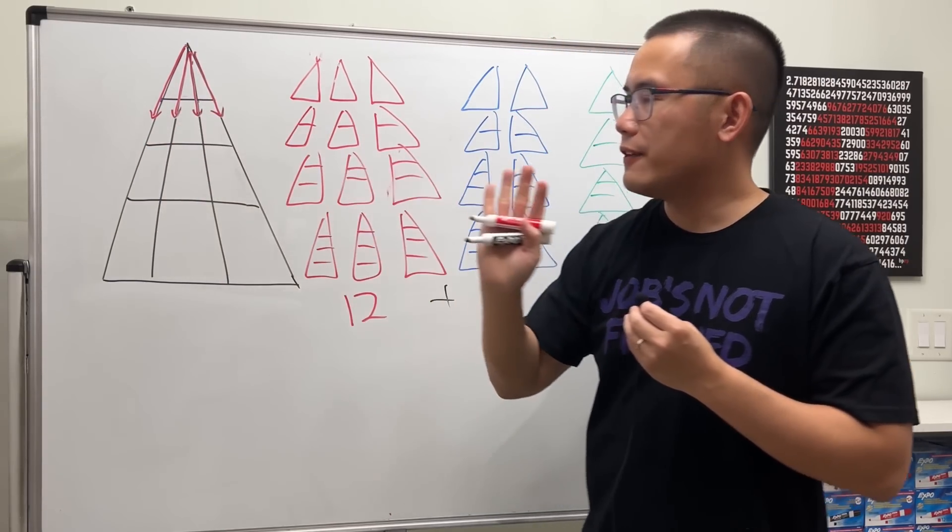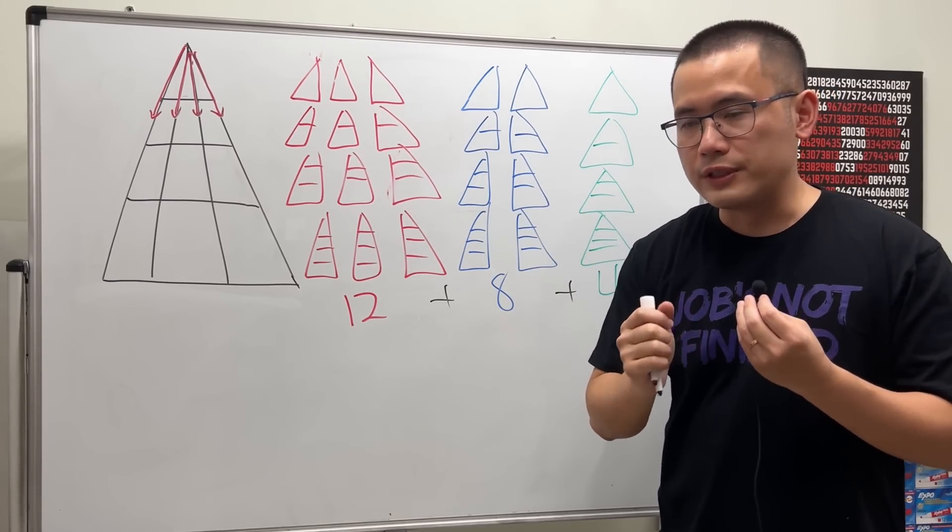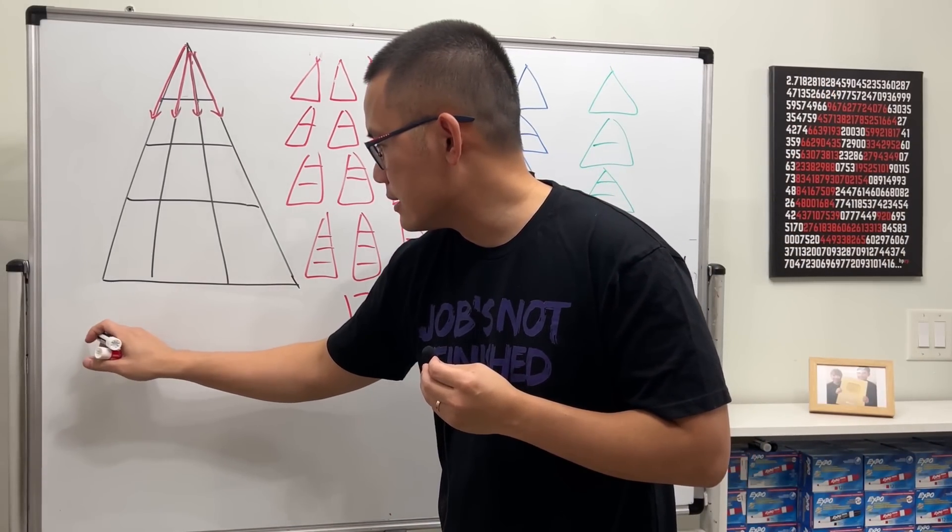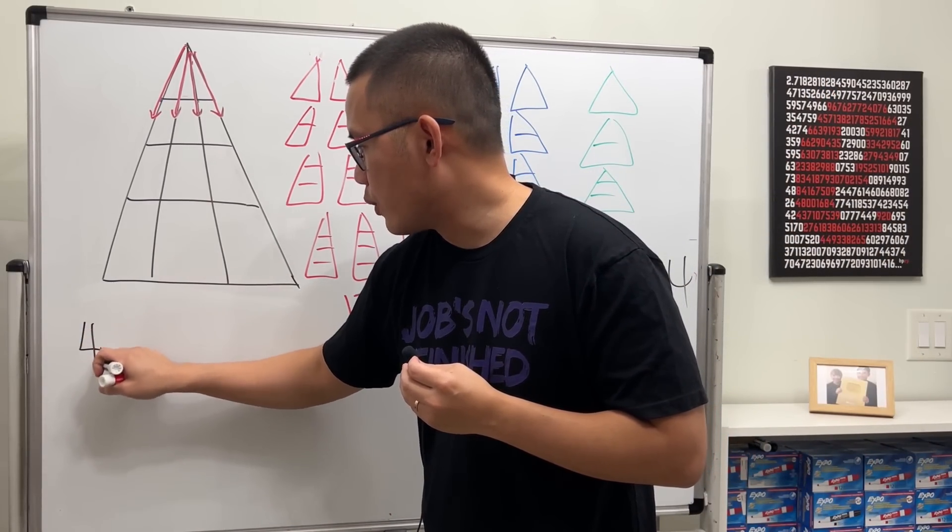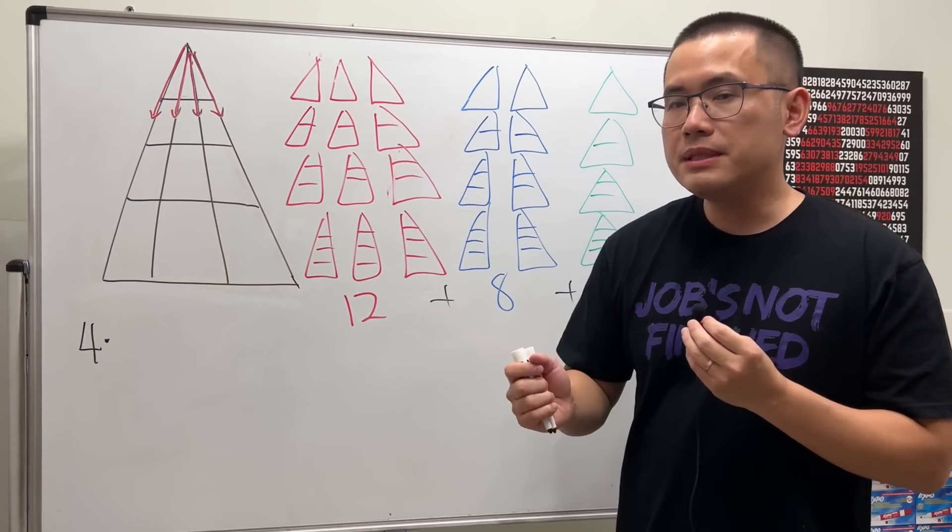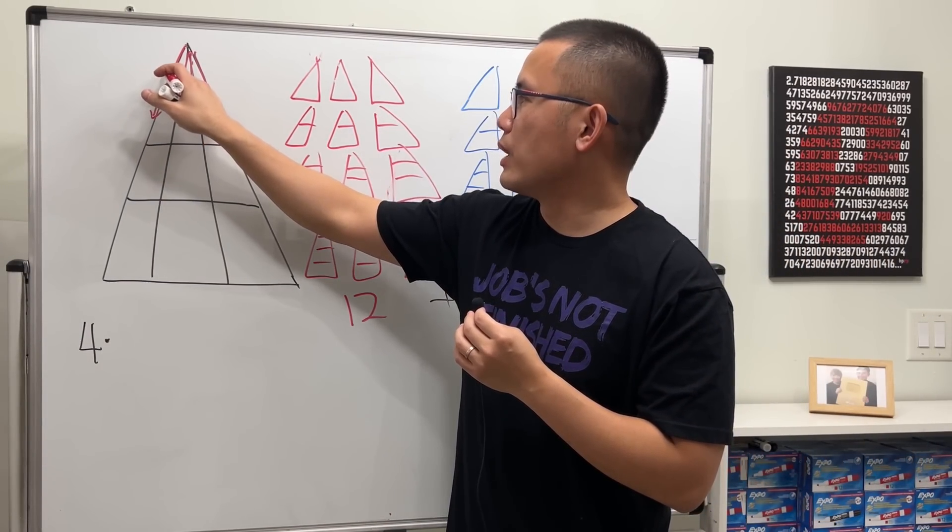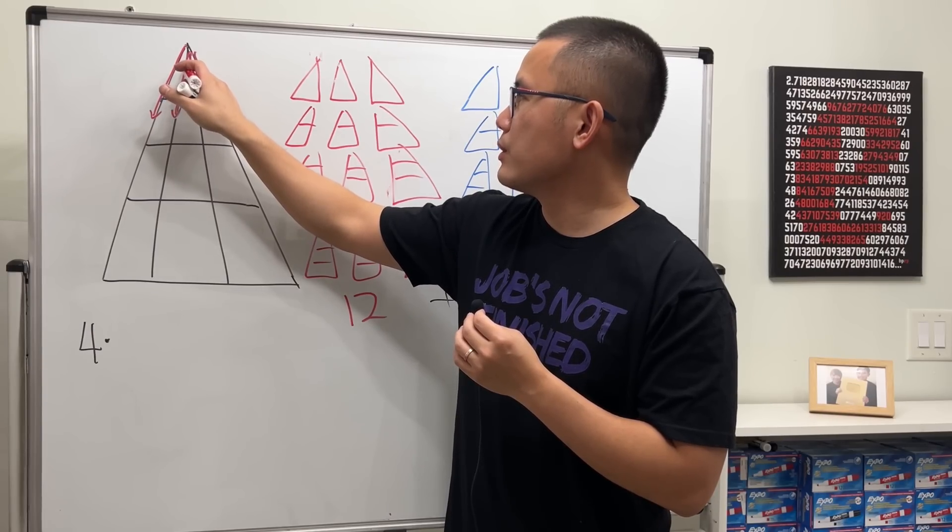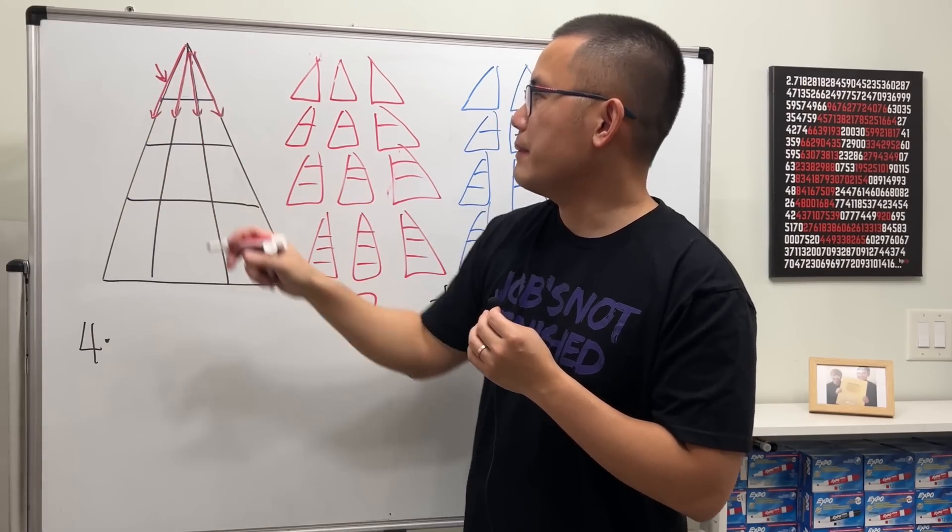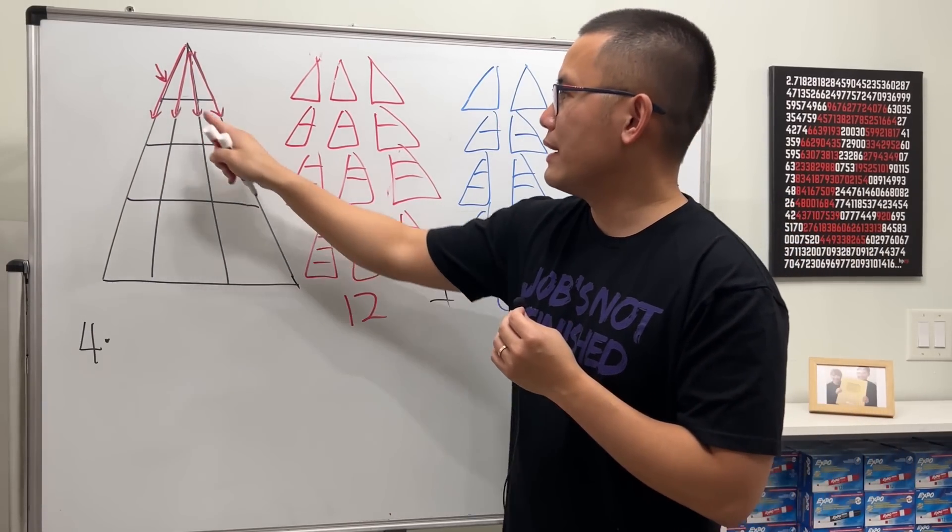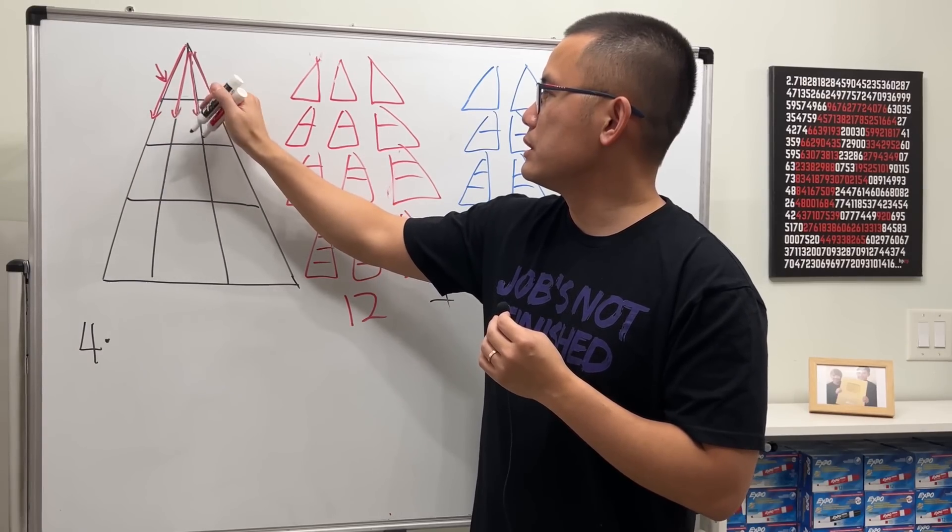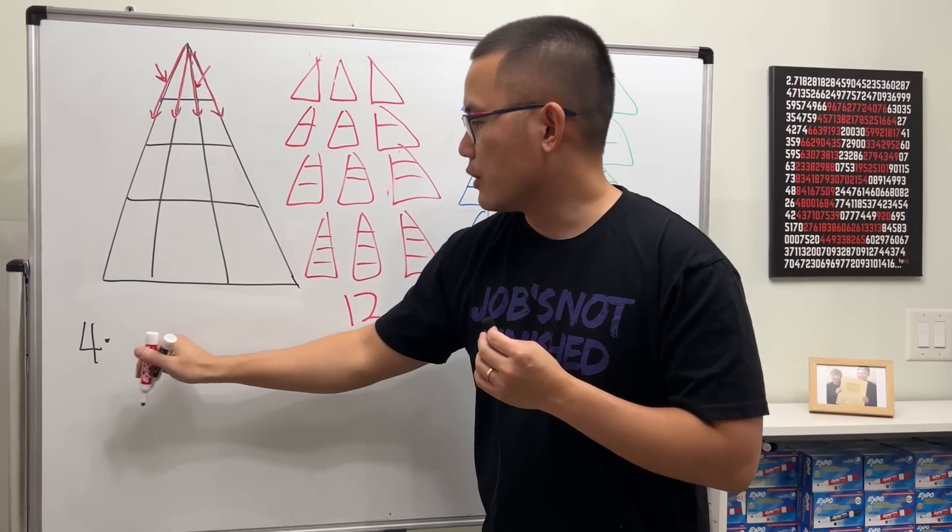So this is the counting part: four choices. Let's say for the first choice we choose this one. And then for the next one we have three more, so maybe we'll choose this right here for the next one. So four times three.